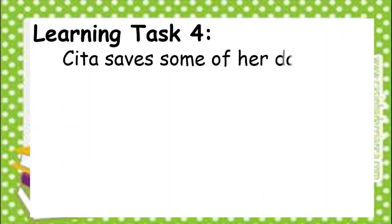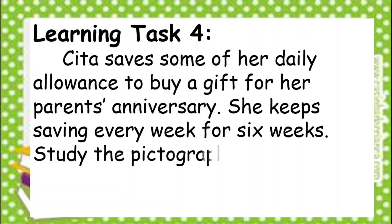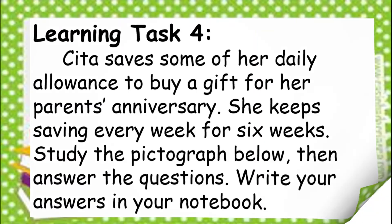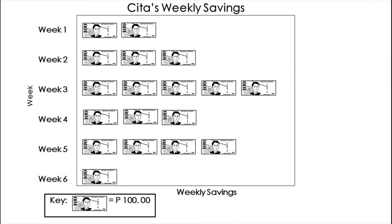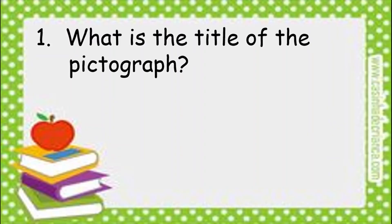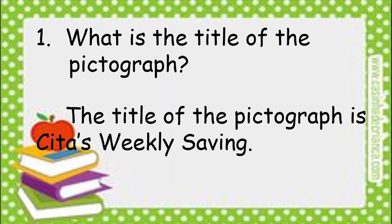For learning task number 4, Sita saves some of her daily allowance to buy a gift for her parents' anniversary. She keeps saving every week for 6 weeks. Study the pictograph below then answer the questions. Write your answers in your notebook. Sita's weekly savings shows week 1 to 6 and the weekly savings. The key is 1 one-hundred peso bill equals 100 pesos. Number 1: What is the title of the pictograph? The title is Sita's weekly savings.